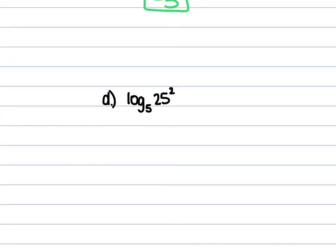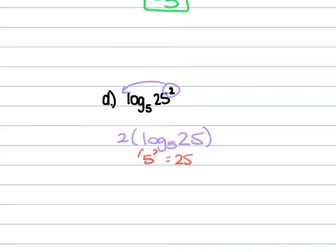For D, we have log₅ of 25 to the 2nd power. Pull that 2 in front: 2 times log₅ of 25. 5 to what power is 25? The 2nd power. So that's 2 times 2, which is 4.